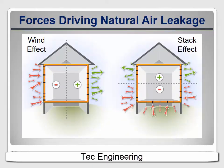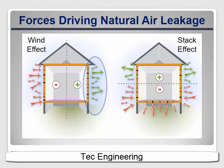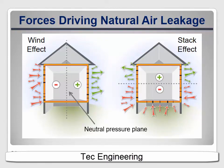When it's windy outside, that wind creates pressures around the house. On the side the wind is coming from, the pressure pushes air into the house. But on the other side, where the wind wraps around, it creates suction that pulls air out. Somewhere in the middle of the house is a vertical neutral pressure plane that divides the intake and outlet sides. The two forces work together to accelerate air leakage. But this doesn't happen all the time — it only happens when there is a significant wind outside. The buoyancy of warm air is a more significant factor, especially in cold climates.